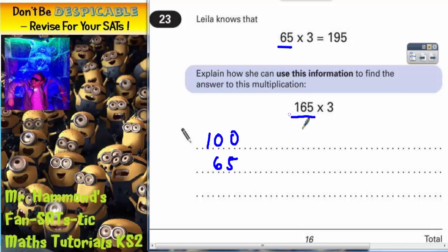So if we're multiplying this by 3, all we've got to do is multiply both of these things by 3. We need to do 100 times 3 and we need to do 65 times 3. Now the good news is we already know what 65 times 3 is - it's 195.